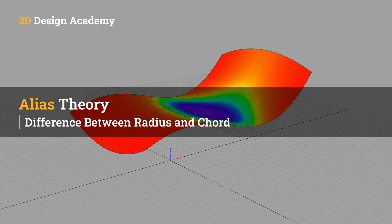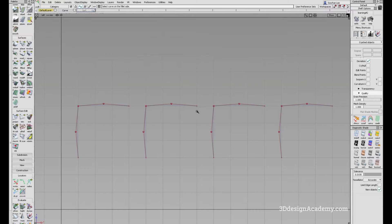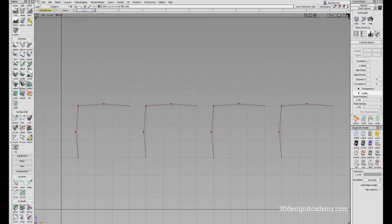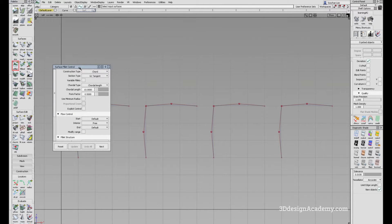Hello, everyone. Welcome to 3ddesignacademy.com. In this lesson, we will learn about the difference between a radius and chord option. In Alias, there are several tools which distinguish between the radius and chord options, one of which is the surface fillet.